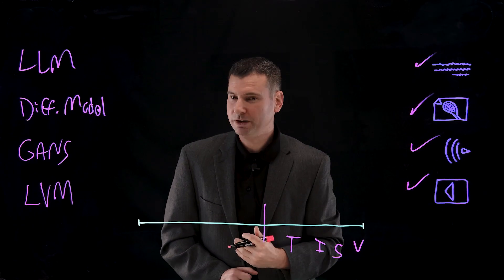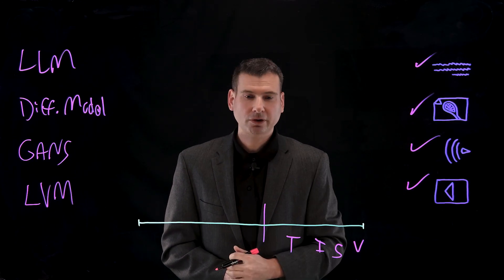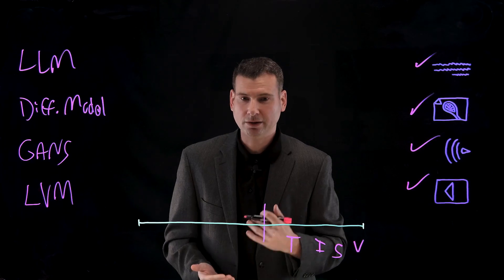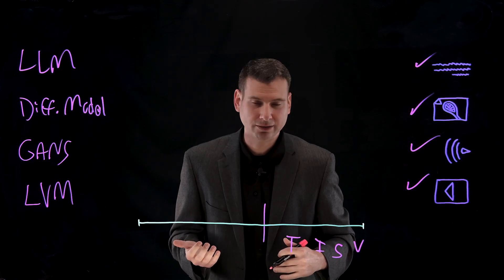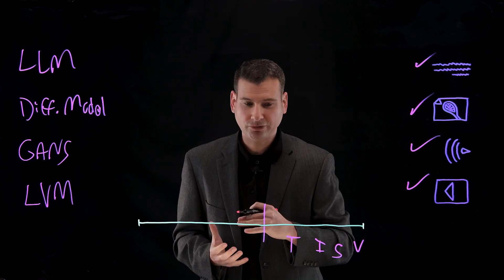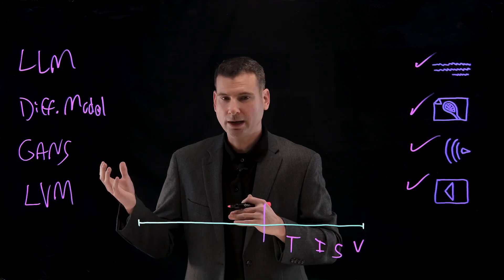We can take those LSTMs and create the LVMs, which are large vision models. These are composed of different encoders and decoders, and you might have attention heads so it knows what to focus in on whenever it's trying to produce a video.